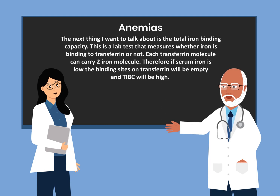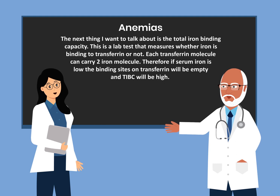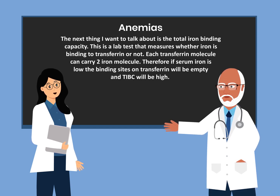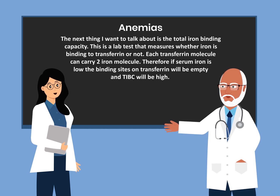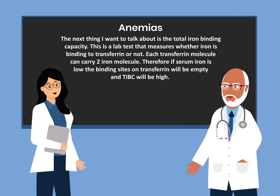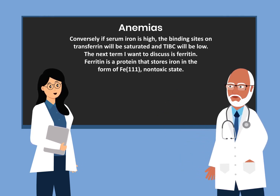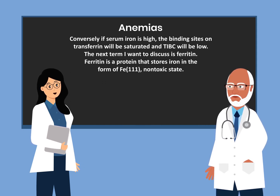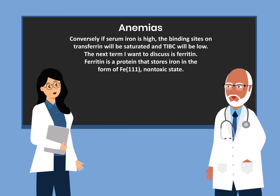The next thing I want to talk about is the total iron binding capacity, or TIBC. This is a lab test that measures whether iron is binding to transferrin or not. Each transferrin molecule can carry two iron molecules. Therefore, if serum iron is low, the binding sites on transferrin will be empty and TIBC will be high. Conversely, if serum iron is high, the binding sites on transferrin will be saturated and TIBC will be low.